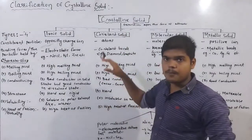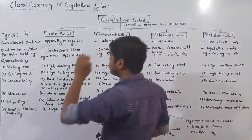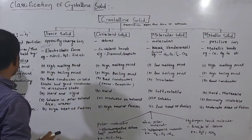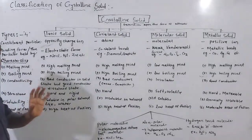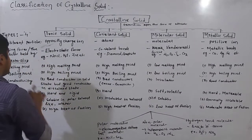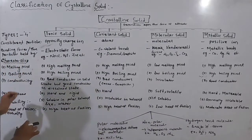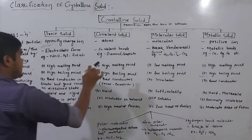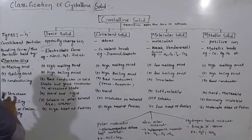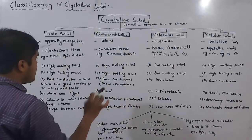Next, characteristics. What are the characteristics? The first characteristic is melting point, second is boiling point, third is conductivity, fourth is structure, fifth is solubility, and sixth is heat of fusion, which is enthalpy.